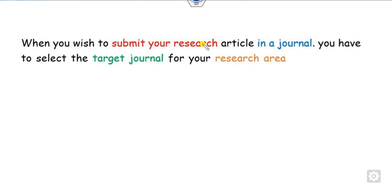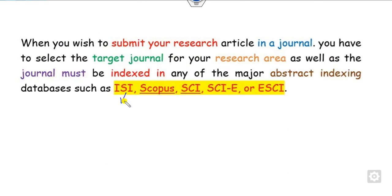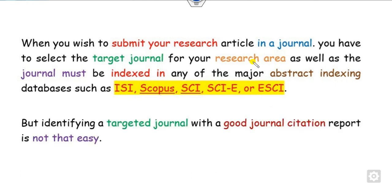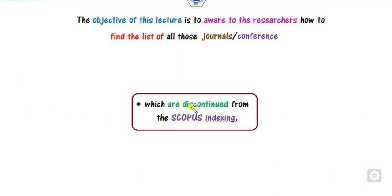Whenever you want to submit your research articles, you always target a journal which has features like indexing in ISI, Scopus, SCI, SCI Expanded, or Emerging SCI. But it is very difficult to find or identify a journal with good journal citation reports. It's not easy to identify whether a journal is Scopus indexed or not. So in this way, we will see how you can find all those journals or conferences which are discontinued from Scopus indexing.